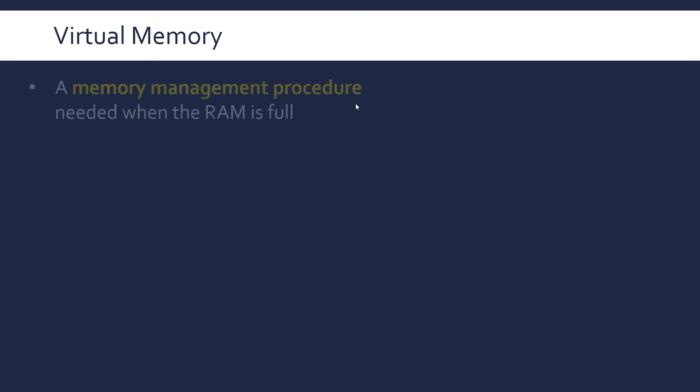When I look at two more types — with an inverted comma around it — of memory, the first one being virtual memory, which as the name suggests isn't quite as it seems. This is actually a memory management procedure — a very good three-word phrase to use in an exam question — that comes into action when the RAM is full.